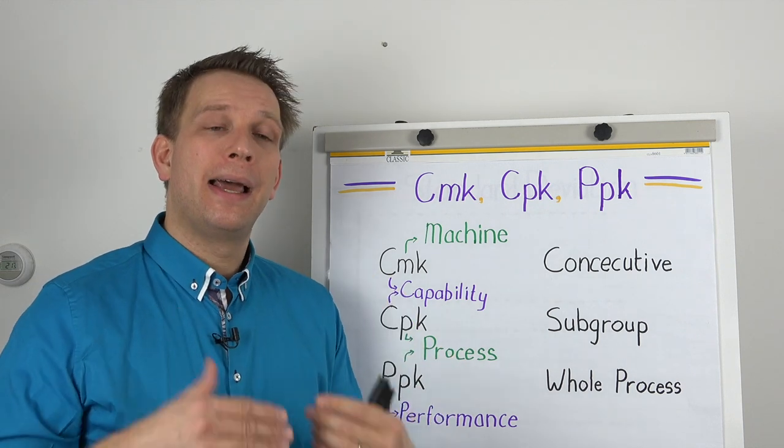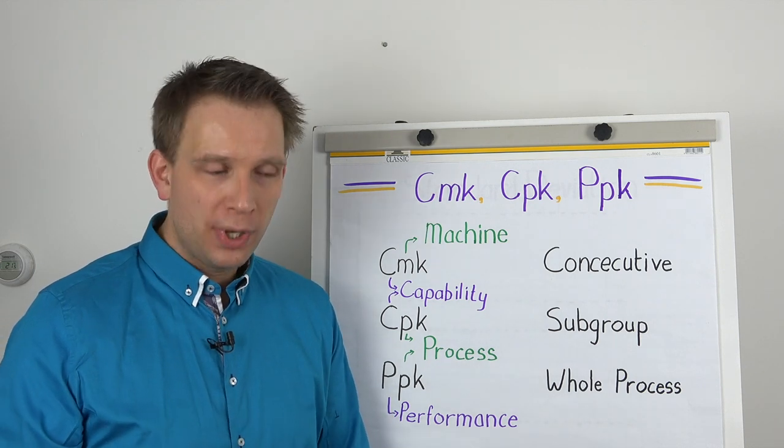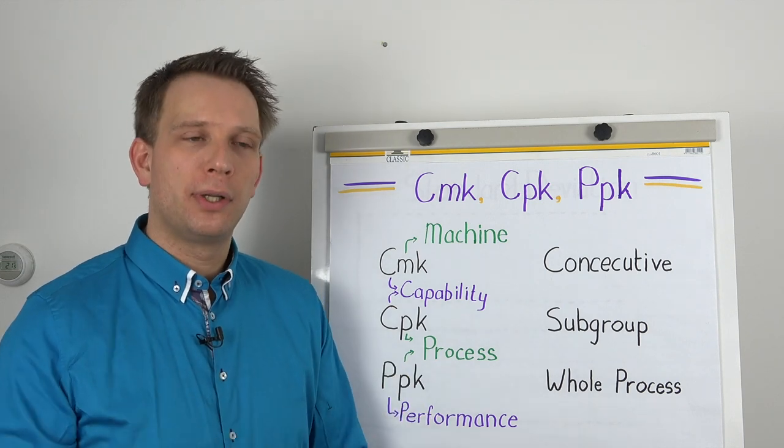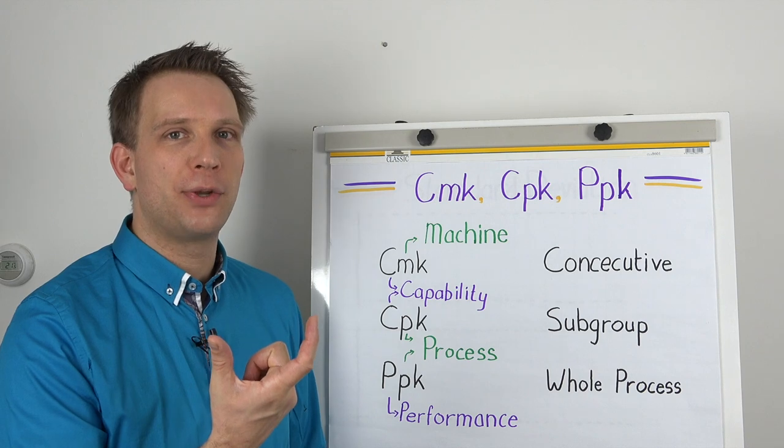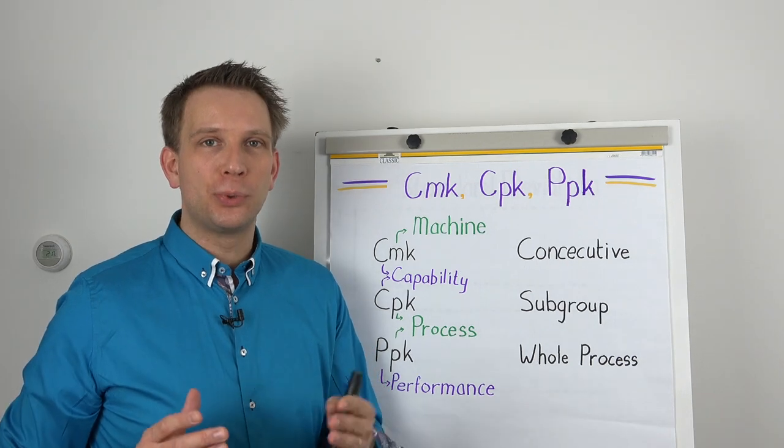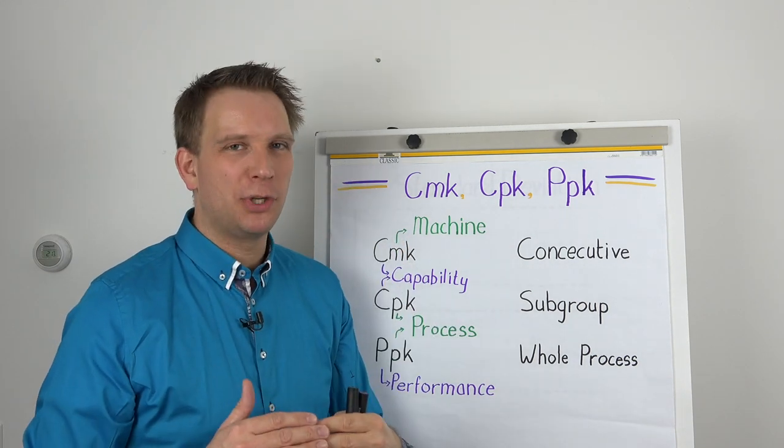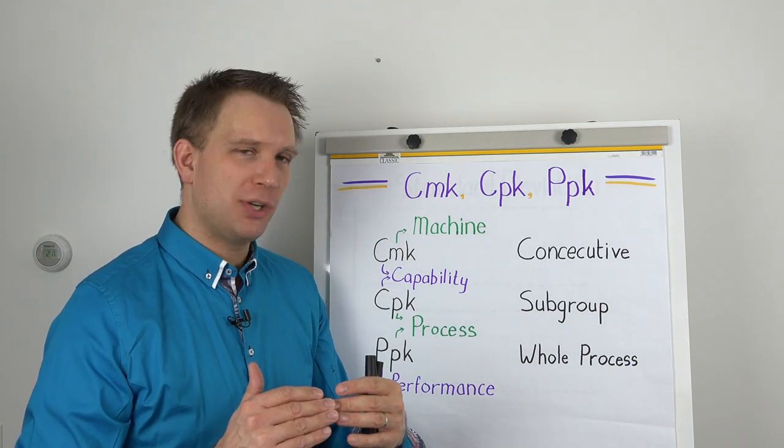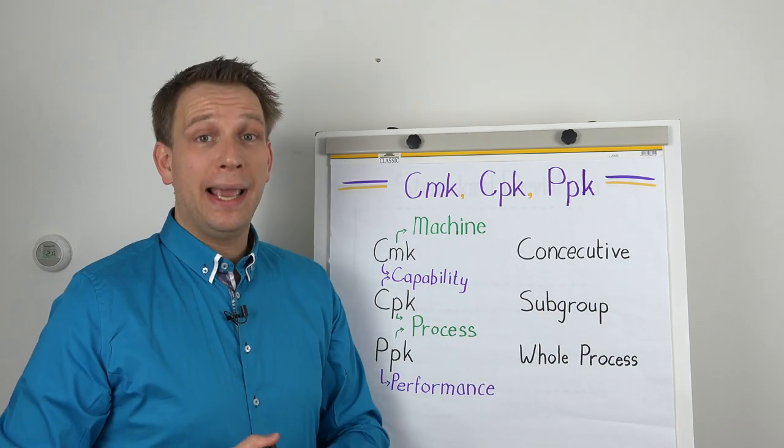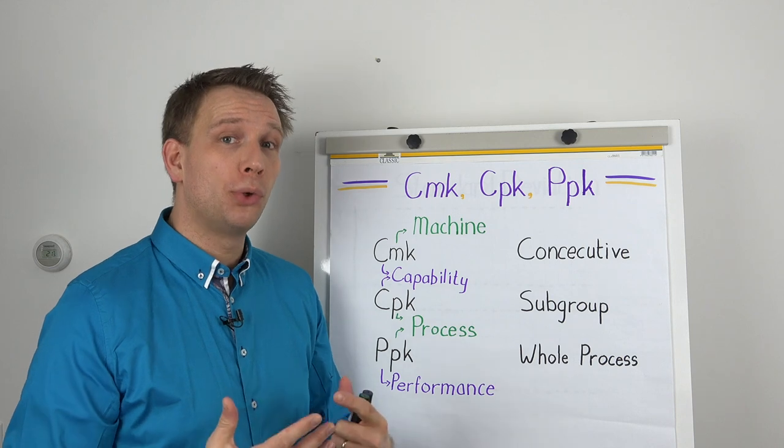But what this D2 value really is trying to do is to estimate the standard deviation based on the range that you get. So the spread, the range that you get for this one subgroup and knowing the subgroup size. So a D2 table will give you numbers for two up to usually 30. If you go over 30, just take a standard deviation anyway. And it gives you a number by which to divide what you got as a range. And by that it again will estimate the standard deviation of the total population.